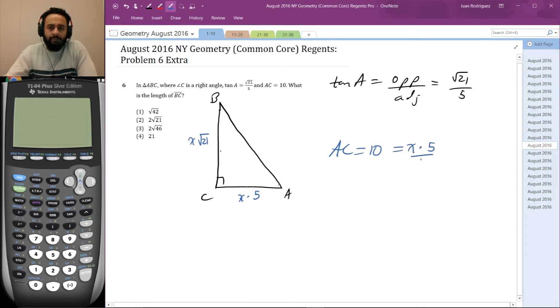Now AC equals 10, which equals X times 5. So I divide by 5 and I got X = 2. They wanted the length of BC—I know this is 2 times √21, so that's 2√21.